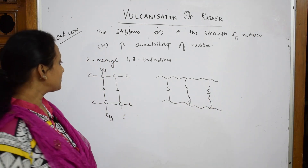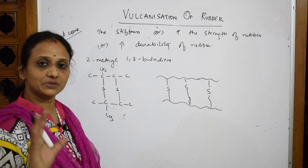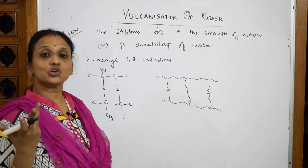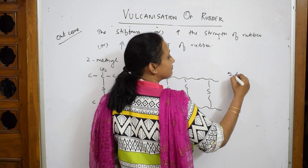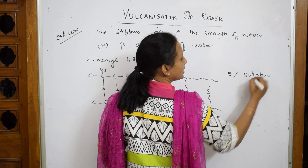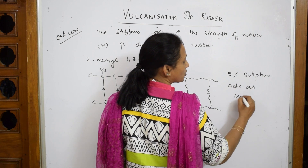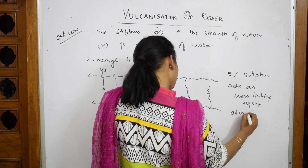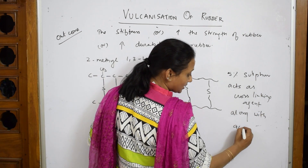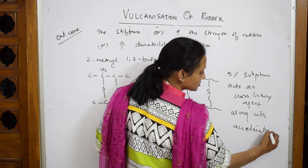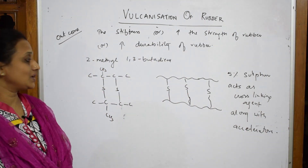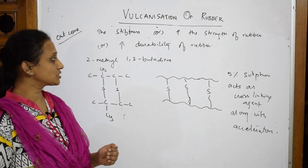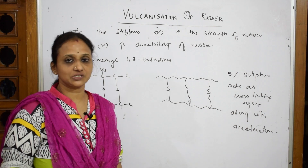Five percent sulfur acts as a cross-linking agent along with accelerators. So to summarize how to write about vulcanization of rubber: start with the properties, then come to the definition, then the outcome, then draw the structures, and state what percentage of sulfur is used.